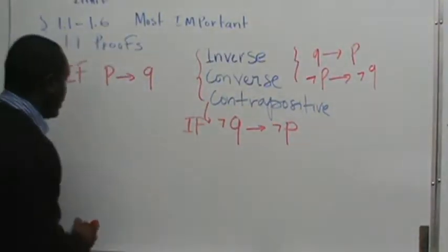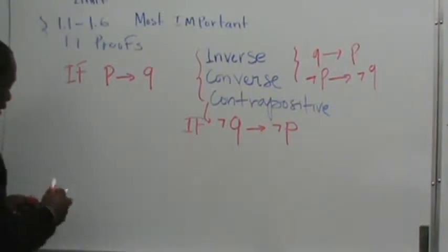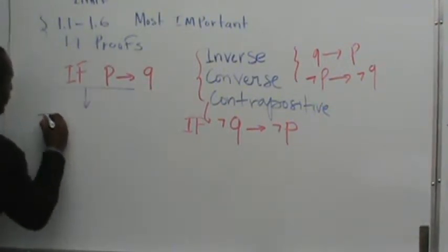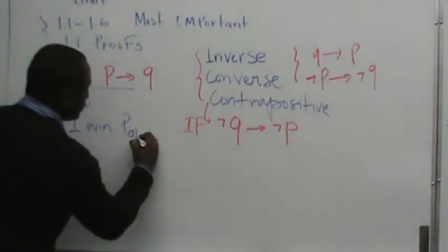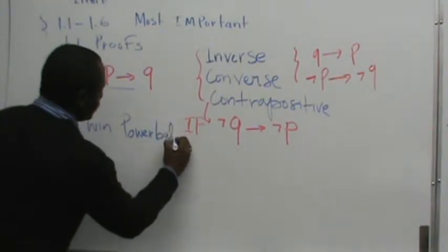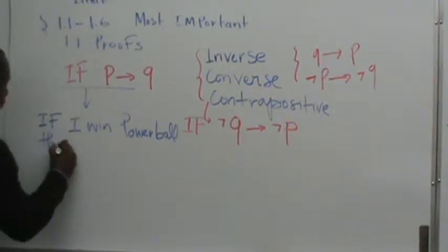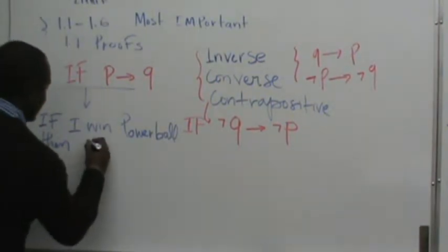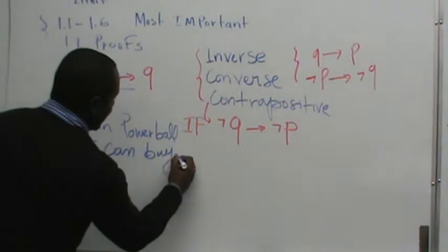I would give you what the contrapositive is. Contrapositive is not Q implies not P. It's very important because if I give you a starting sentence like this, if I give you a sentence like if I win the Powerball, if I win Powerball, then I can buy lots of food.